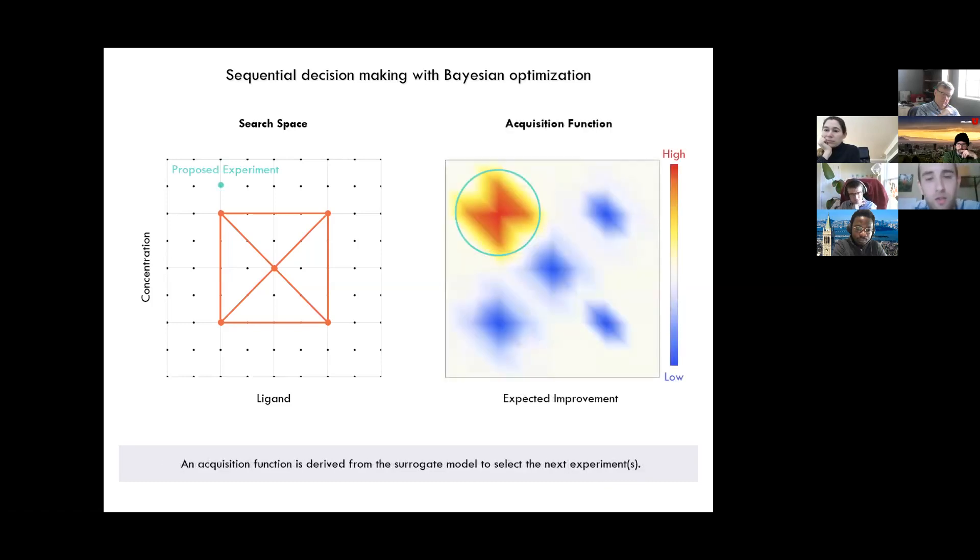And then from this surrogate model, we derive an acquisition function. And this acquisition function is designed to balance the exploration of the experimental space and the exploitation of information we've gained from running experiments. Here's an example of one called expected improvement, which is the expectation value of the improvement that you would get from running an experiment over the best observed yield thus far. So running expected improvement and computing the argmax over this entire search space allows us to choose the next experiment that we want to run.